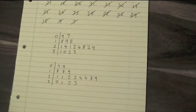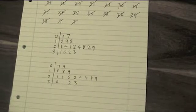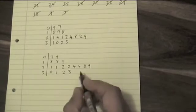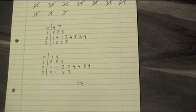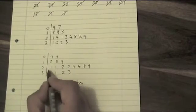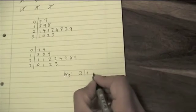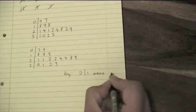Last thing, and you can't forget this because it will be a mark for it, is you need to write a key. So just write key and just pick one of these rows. For example, this 20s row, I'm going to write 2-1 means 21.